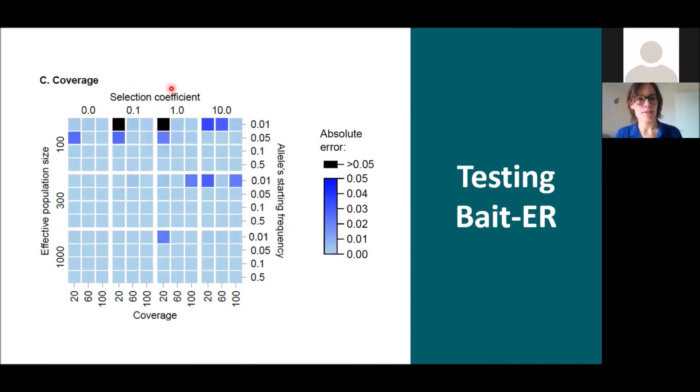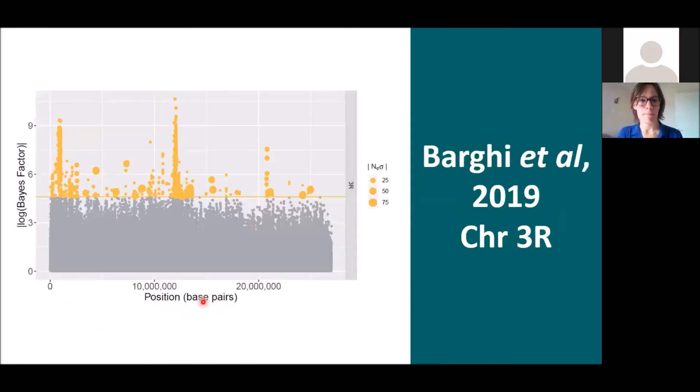But we also wanted to test whether the sequencing depth had some sort of effect on our method's performance like we did just previously with the number of replicate populations. But it seems though for coverage, the effect is not as pronounced and even if we do vary, as you can see here at the bottom, Bait-ER performs overall quite well apart from these few scenarios where populations are very small again and coverage is fairly low, 20 times.